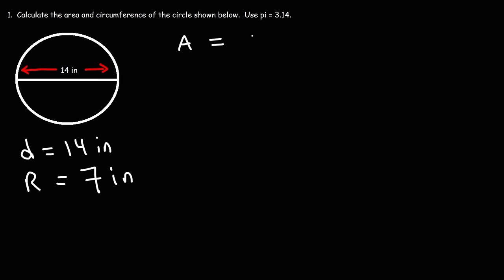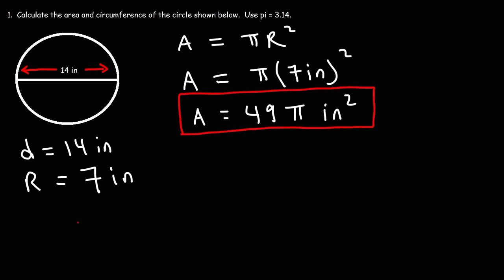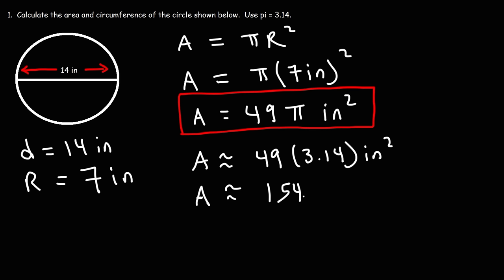Now that we know the radius, let's calculate the area. The area is pi R squared, so we replace R with 7 inches. 7 squared, or 7 times 7, is 49. So the exact area is 49 pi square inches. Replacing pi with 3.14: 49 times 3.14 is 153.86, which we round to 154 square inches.